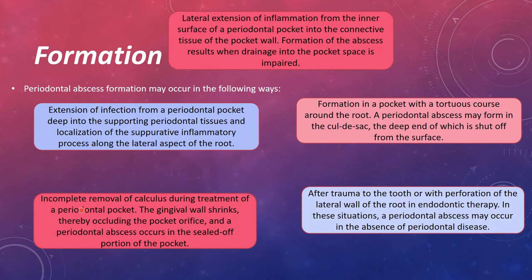Another way of formation is incomplete removal of calculus during treatment of a periodontal pocket. The gingival wall gets tight after the initial scaling, thereby occluding the periodontal pocket orifice, so the periodontal abscess occurs in the sealed-off portion of the pocket.